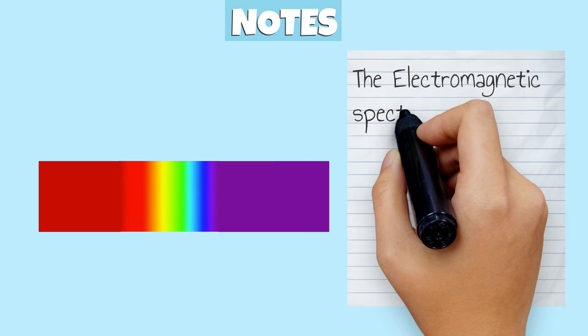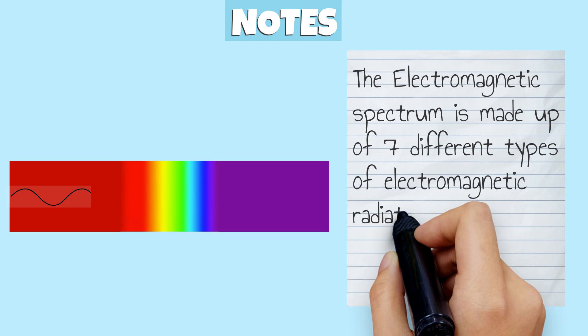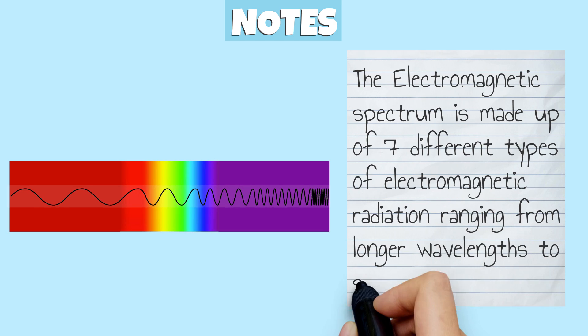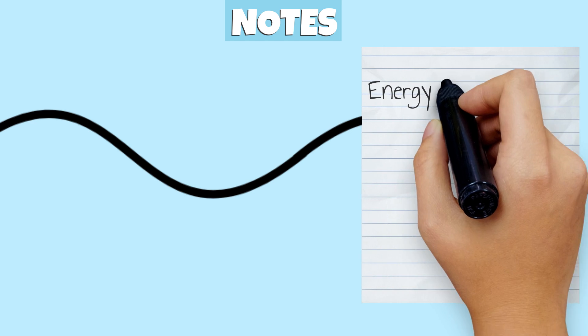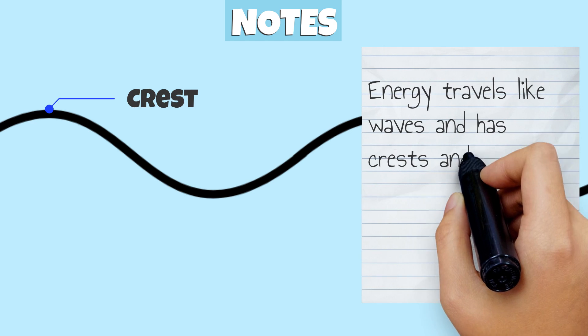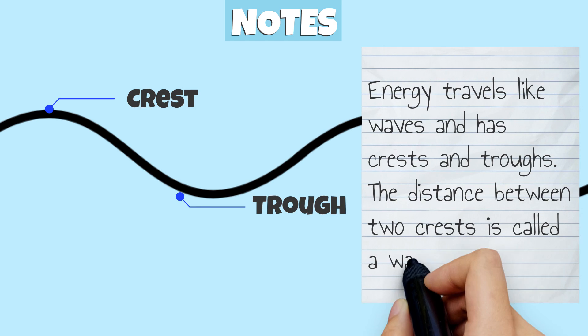Let's review what we just learned. The electromagnetic spectrum is made up of seven different types of electromagnetic radiation, ranging from longer wavelengths to shorter wavelengths. Energy travels like waves and has crests and troughs. The distance between two crests is called the wavelength.